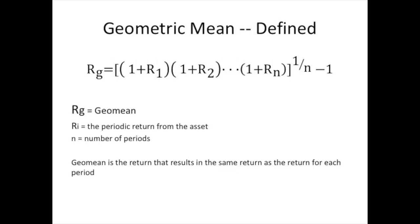Here is the mathematical definition of the geometric mean. R sub g is the geometric mean. R sub 1, R sub 2, R sub 3, all the way up to R sub n are the periodic returns from the asset — we calculated those in homework 1. It's the percent return: you take 1 plus R1 times 1 plus R2, multiply those together, take it to the power of 1 over n, and that equals your geometric mean.